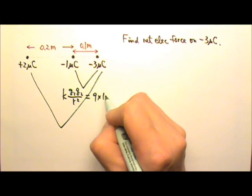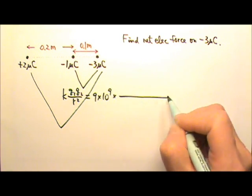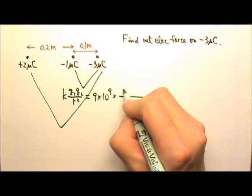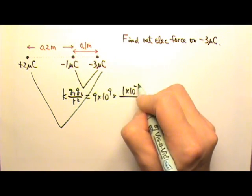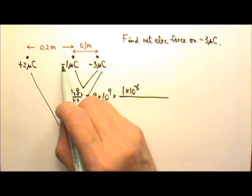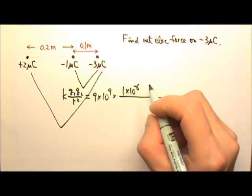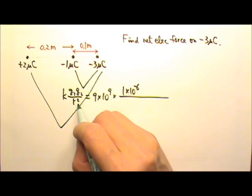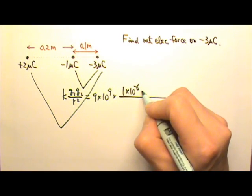And K is 9 times 10 to the 9th. The Q1 is 1 µC, 1 times 10 to the negative 6th. That's what µ is, 10 to the negative 6th. And remember, I'm not plugging in the signs. I'm just using this Coulomb's law to find the magnitude of the force.